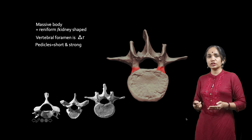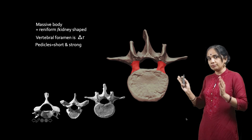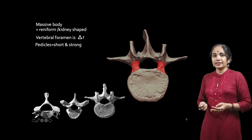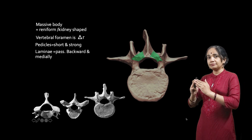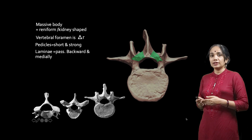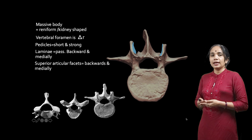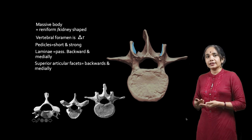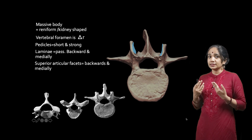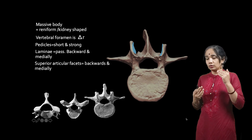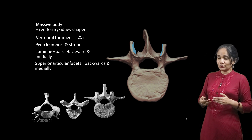The lumbar vertebra has really short and strong pedicles, which are the small parts of the vertebra going backwards. It also has laminae which pass backwards and medially to complete the vertebral arch. It has superior articular facets to articulate with the vertebra above and inferior articular facets to articulate with the vertebra below.